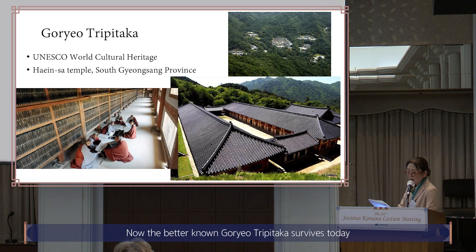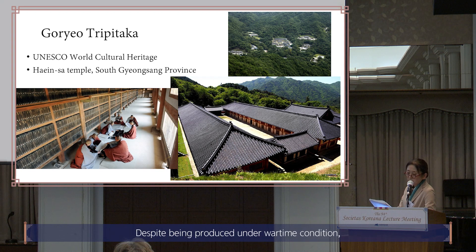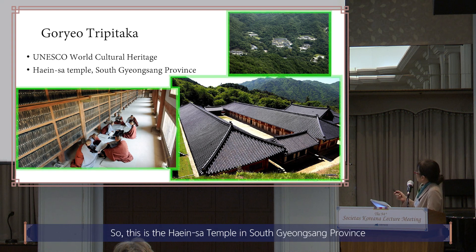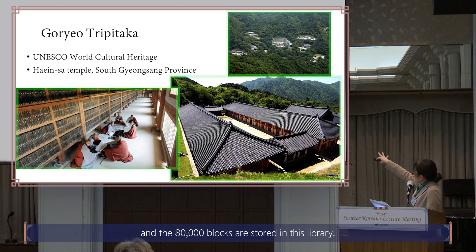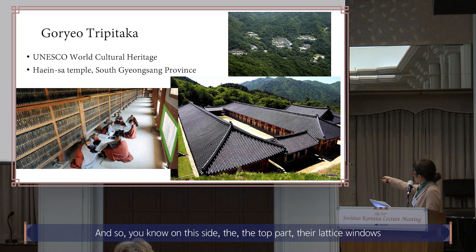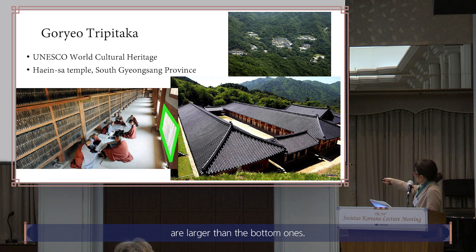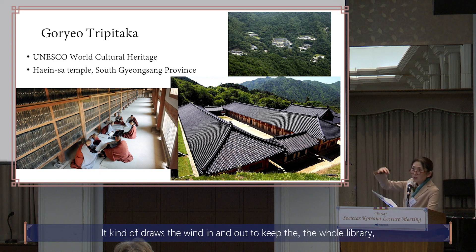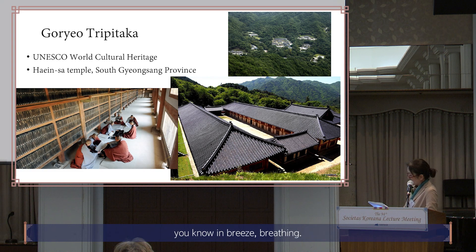The better-known Koryo Tripitaka survives today in its entirety at the Heinsa Temple in South Kyeongsang Province. Despite being produced under wartime conditions, this set is regarded as the finest among the 20 versions of the Tripitaka originating in East Asia. The 80,000 blocks are stored in a library with windows of different sizes on top and bottom — on this side the lattice windows are larger at the top than the bottom, and on the opposite side the top windows are smaller and the bottoms are larger — creating a ventilation system that keeps the library breathing.